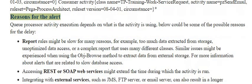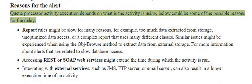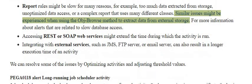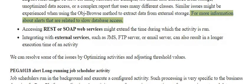Reasons for the alert: queue processor activity execution depends on what the activity is using. Below are some of the possible reasons for the delay. Report rules might be slow for many reasons, for example, too much data extracted from storage, unoptimized data access, or a complex report that uses many different classes. Similar issues might be experienced when using the ObjBrowse method to extract data from external storage.